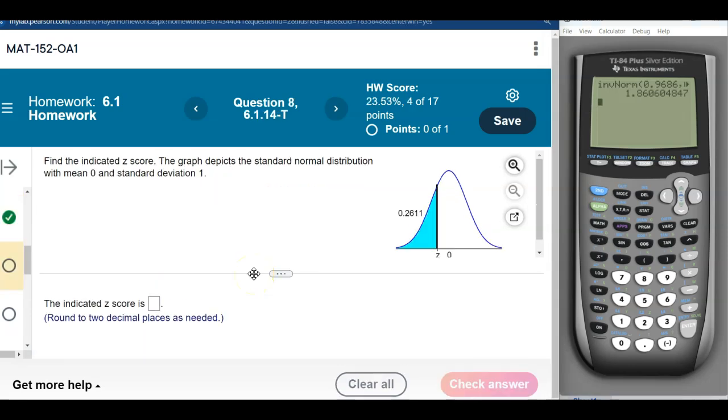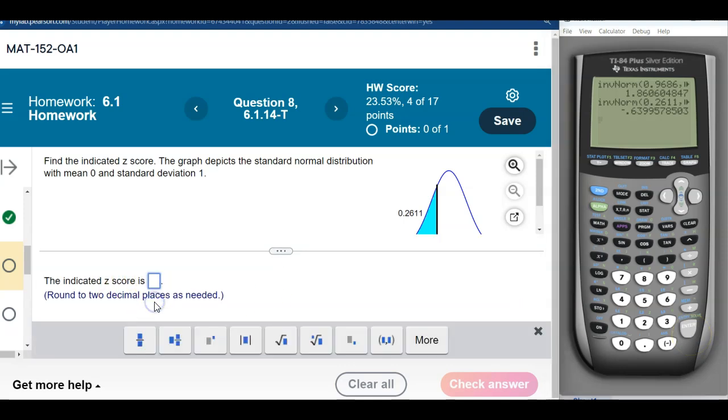All right, let's look at another one. This one, a z-score with an area of 0.2611 to the left of it. Because that's the same exact type of problem, I just need to hit second enter. It brings back the last thing I did. And all I'll do is just change this area to the updated area. And there's my z-score. To two places, that'll be negative 0.64.